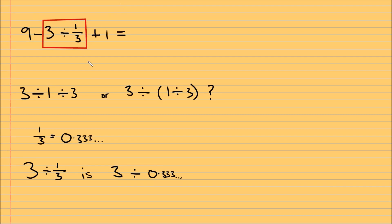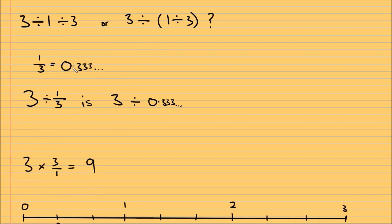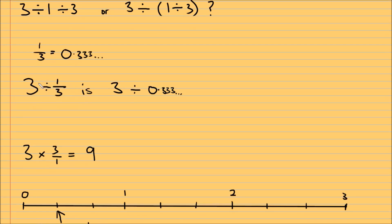So this part in the red box, how do you see it? Is it 3 divided by 1 divided by 3, or 3 divided by open brackets 1 divided by 3? Well, it's actually pretty simple. This 1 over 3 means a third, and you would read this as 3 divided by a third. A third is sometimes written as 0.3 recurring, so 3 divided by a third is also 3 divided by 0.3 recurring.